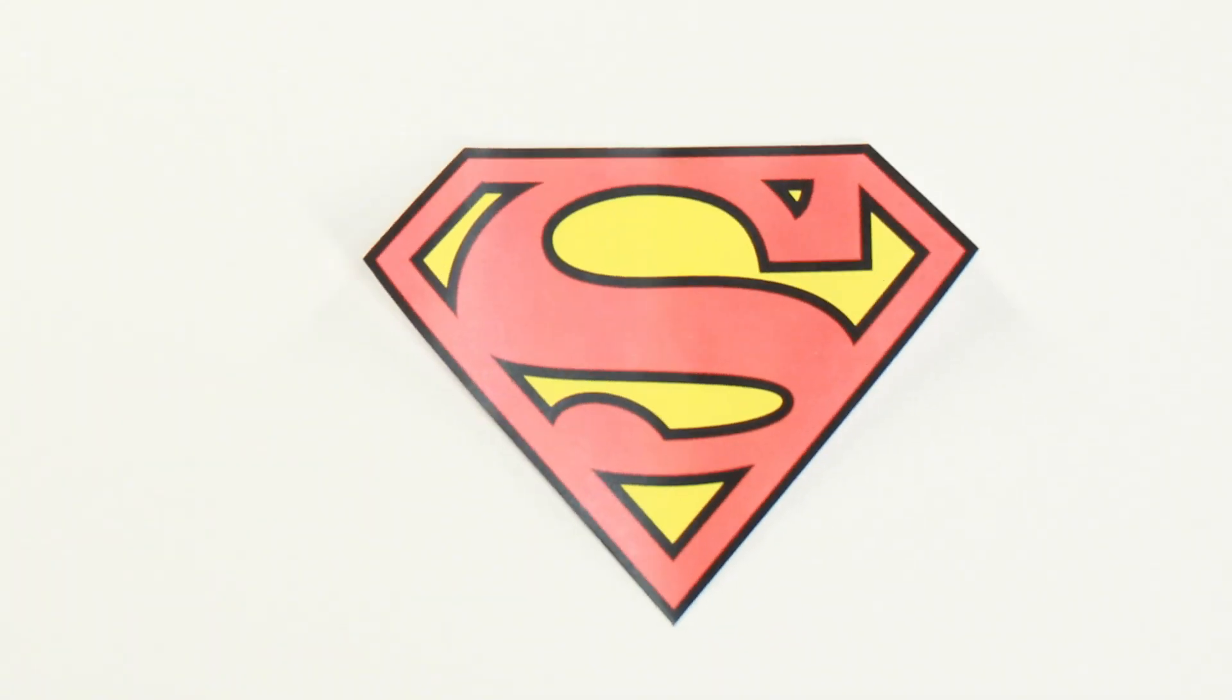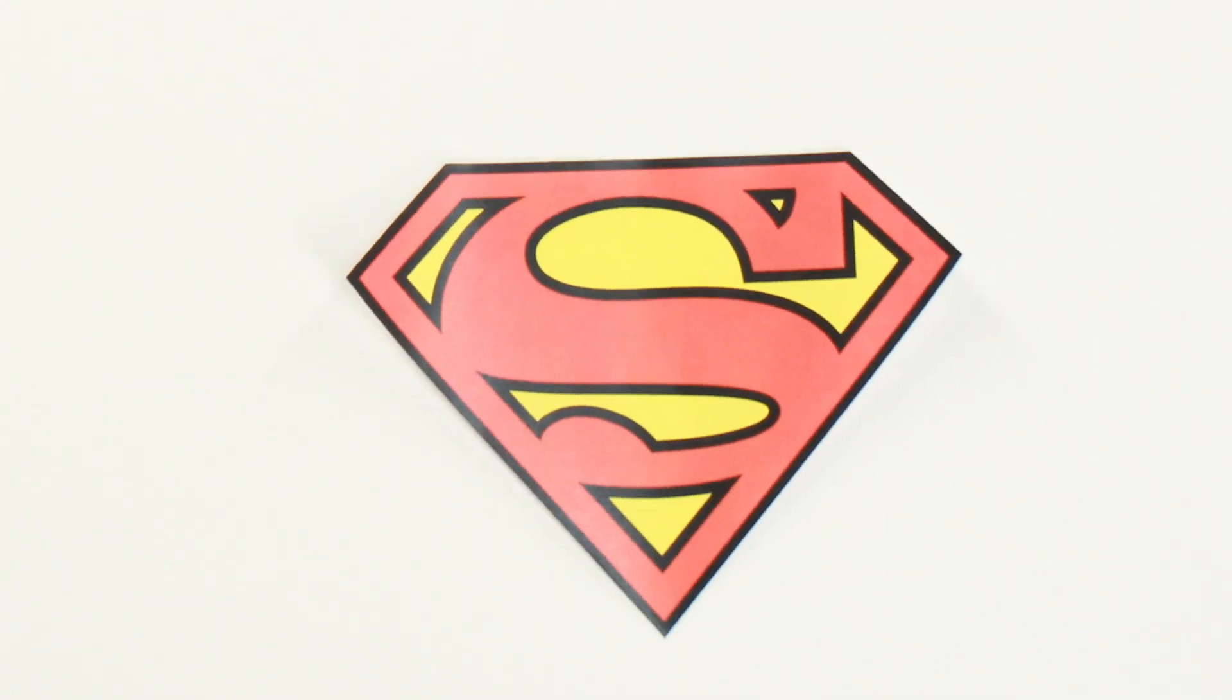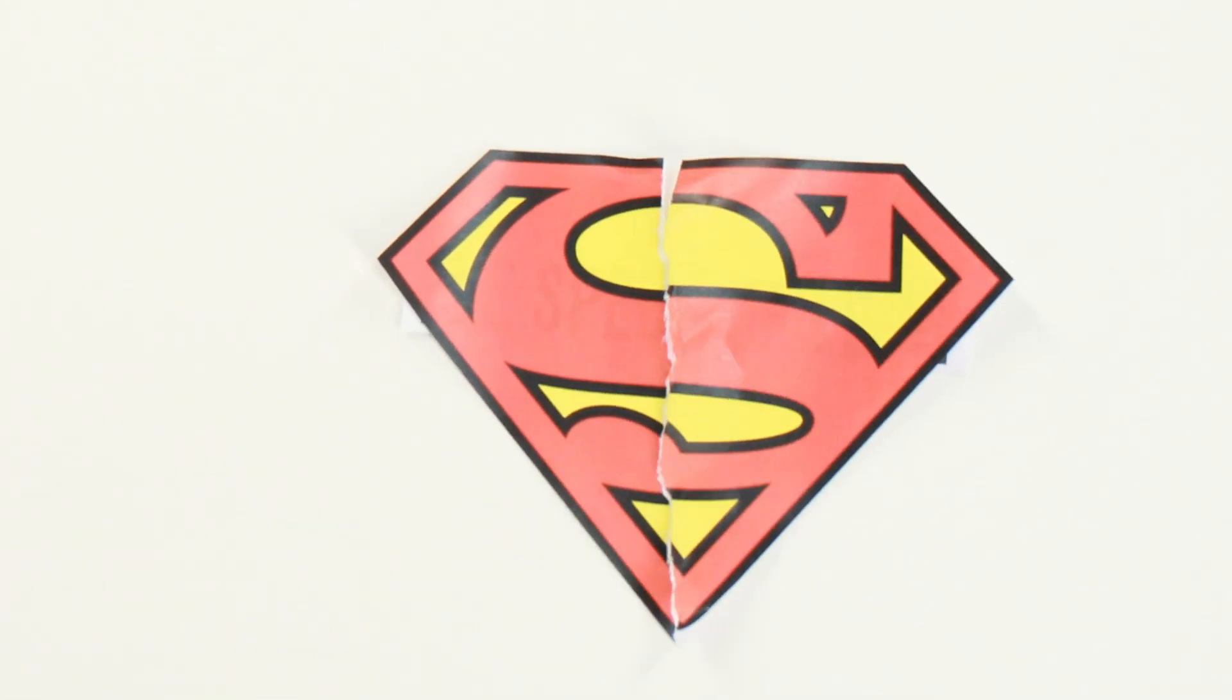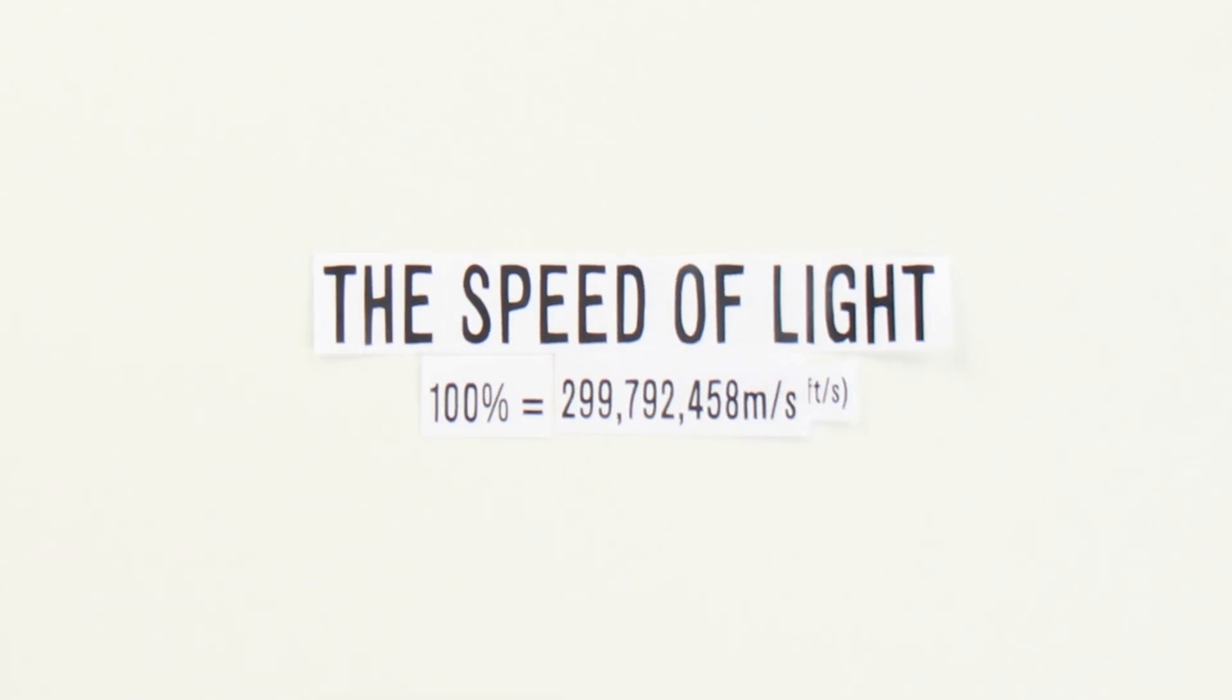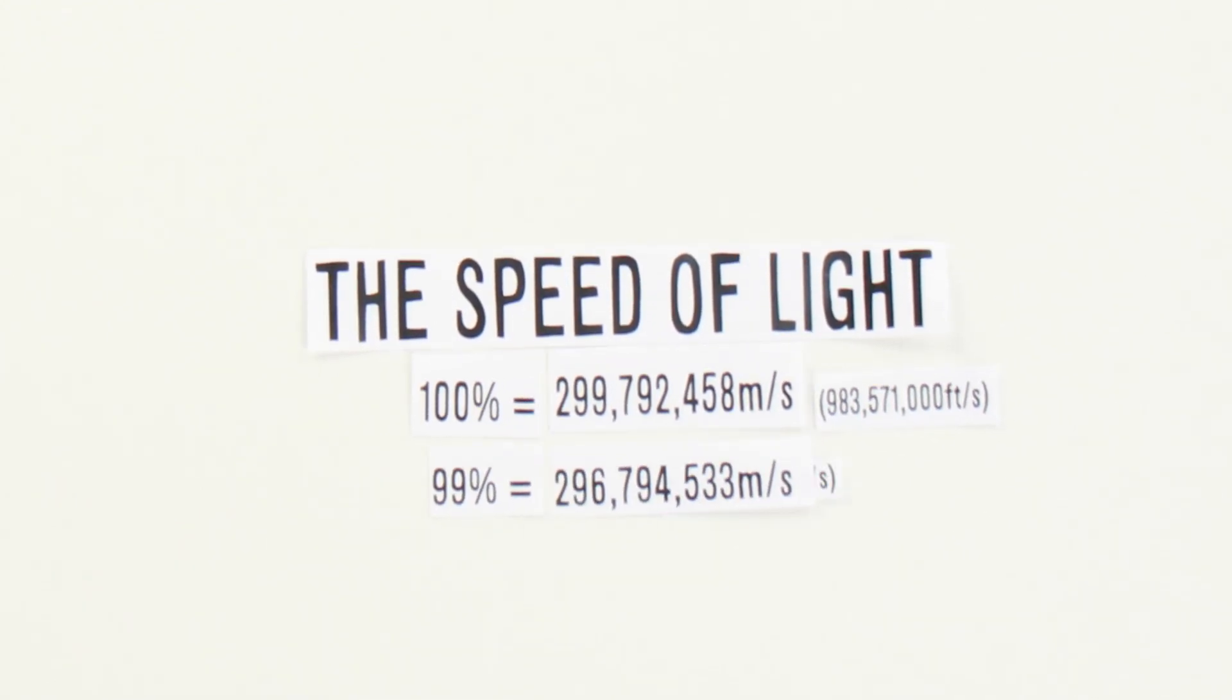In this theory, no matter how strong Superman is, there is one universal law of physics that he can't break, that nothing with mass can achieve traveling the speed of light. So we will put him 1% below that 299,792,458 meter per second limit at 99% the speed of light.